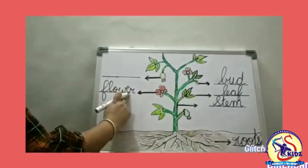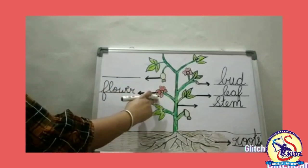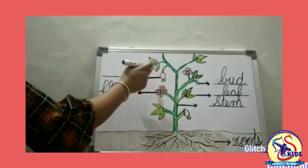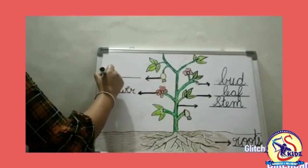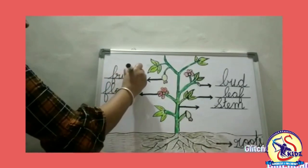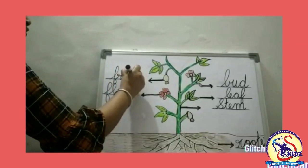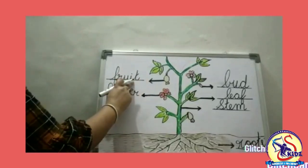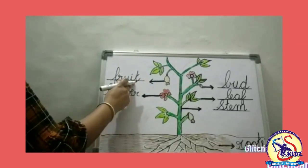Flower is a colorful and attractive part of a plant. Now comes fruit. Spell fruit: F-R-U-I-T. Fruit is an edible part of a plant.